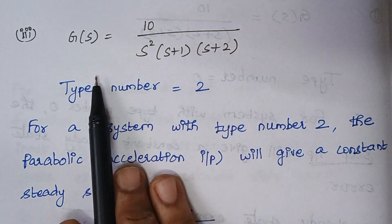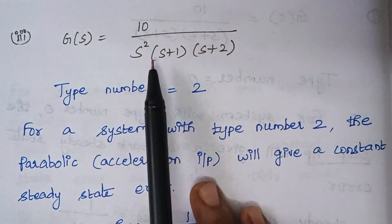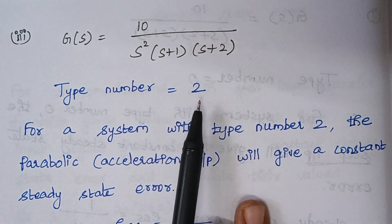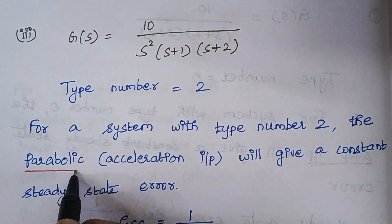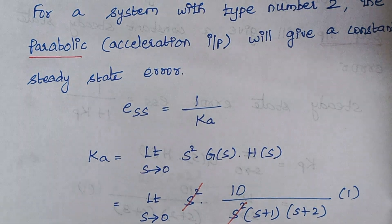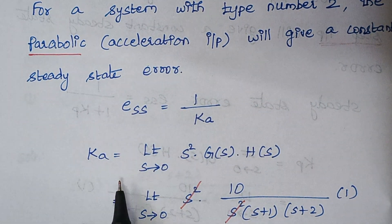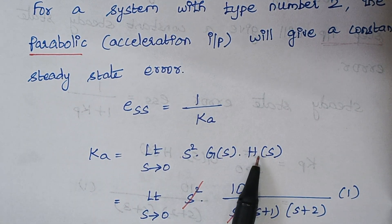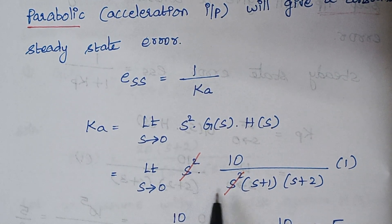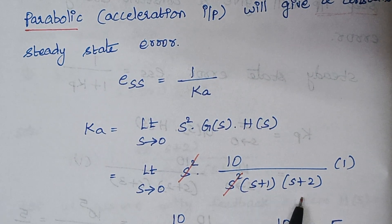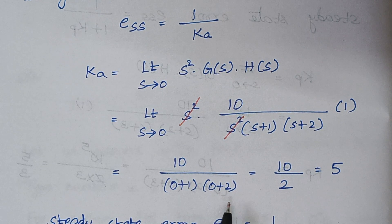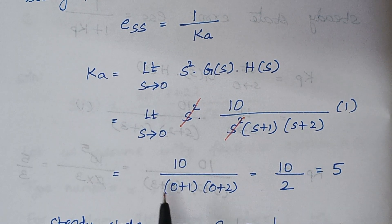We are going to solve the third part of the problem. Here we have an individual s with power 2, therefore the type number of the system is 2. For a system with type number 2, we have to give a parabolic input, also known as acceleration input. The steady state error is given by 1/kA, where kA equals the limit as s tends to 0 of s²·G(s)·H(s). Substituting G(s), the s² terms cancel, leaving 10 divided by (s+1)(s+2). Substituting s equals 0 gives 10 divided by 1×2, which is 10/2 equals 5. So kA equals 5.